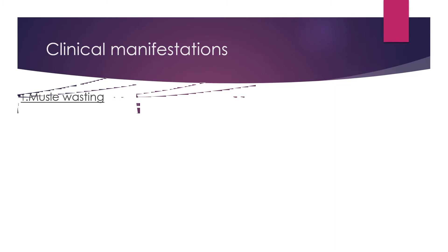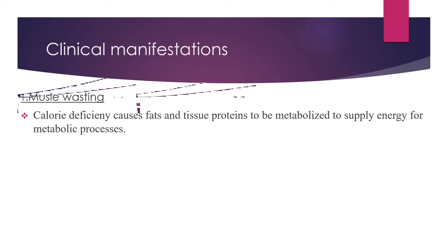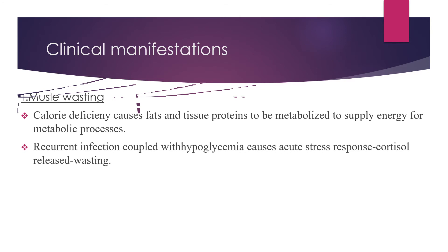Muscle wasting is common in marasmus or non-edematous severe acute malnutrition and occurs due to three reasons. First, calorie deficiency causes fats and tissue proteins to be metabolized to supply energy. Second, recurrent infection coupled with hypoglycemia causes acute stress response and cortisol release, causing wasting. Third, underlying chronic infection in these children causes muscle wasting.